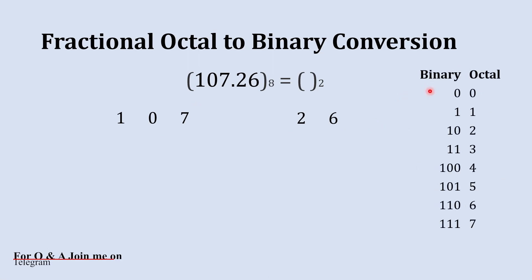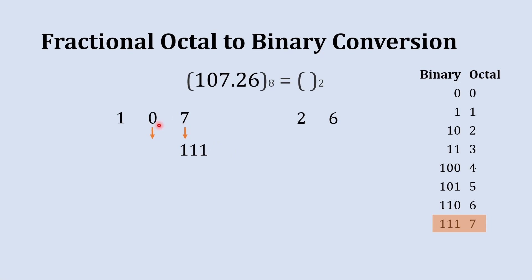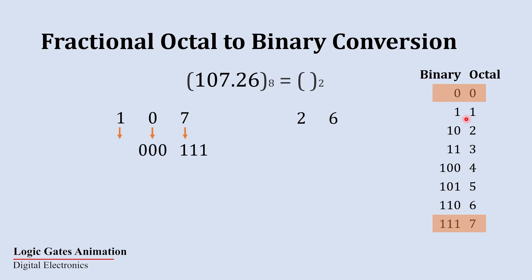Here is our binary to octal conversion table for reference. Starting with 107, we begin with 7. The binary equivalent to 7 is 1 1 1, so we write 1 1 1. The next digit is 0; the binary equivalent to 0 is 0 0 0. The next digit is 1; the binary equivalent to 1 is 0 0 1, so we write 0 0 1.